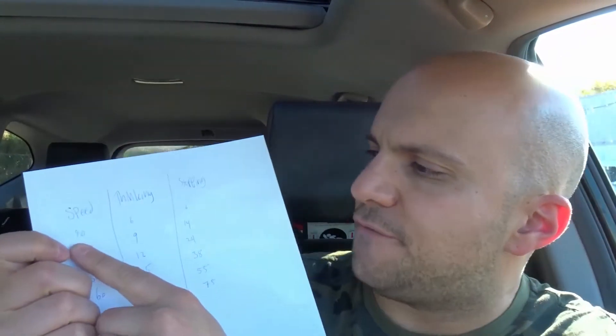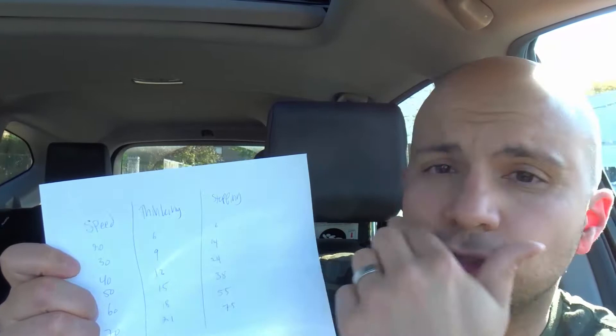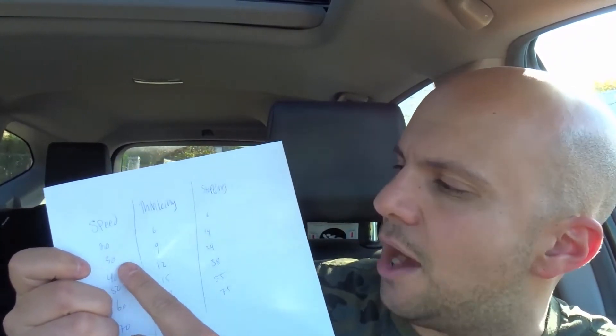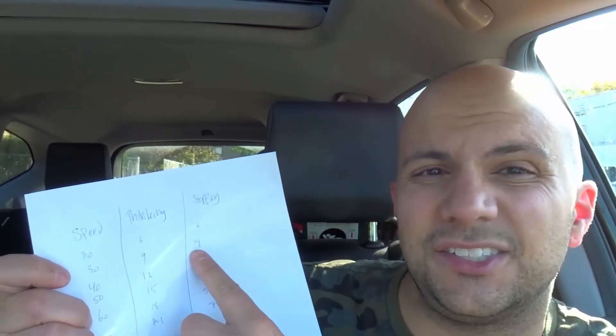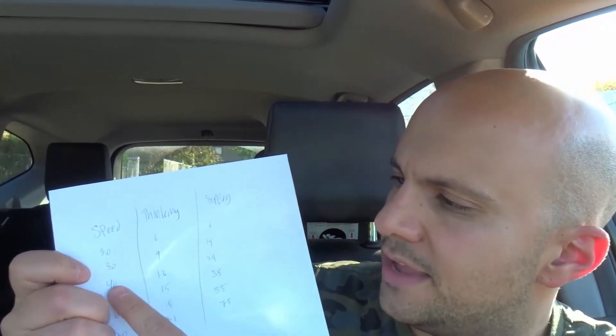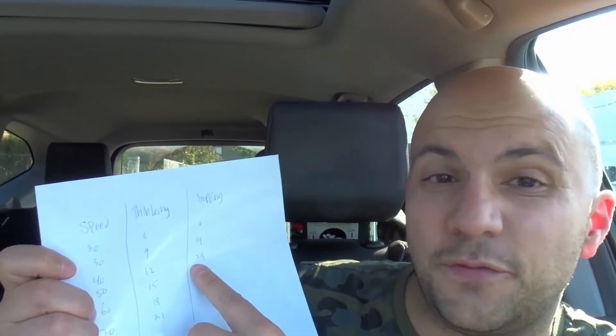These examples are based on an average car with average braking power. If your speed is 20 miles an hour, your thinking distance will be 6 meters — it'll take you 6 meters to figure out that you need to brake — and your stopping distance will also be 6 meters. If your speed is 30 miles an hour, your thinking distance will be 9 meters and your stopping distance goes up to 14 meters. At 40 miles an hour, it's 12 meters thinking and 24 meters stopping.